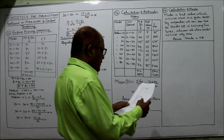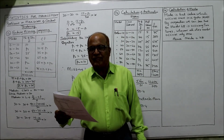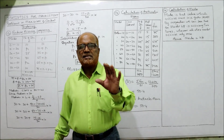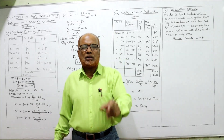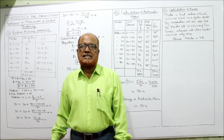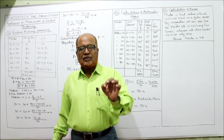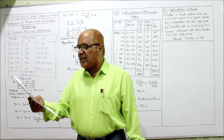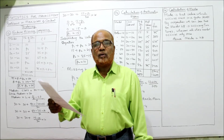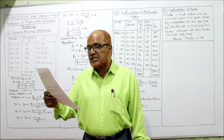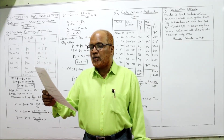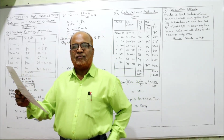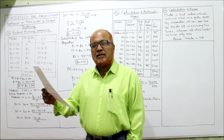Now see problem number 12: find the missing frequency in the following distribution if n equals 100. n stands for the total of frequencies — the total frequency is n, so here n is 100. The median is also given as 30. We have to calculate the missing frequencies. Marks are given as a continuous series: 0–10, 10–20, and so on.